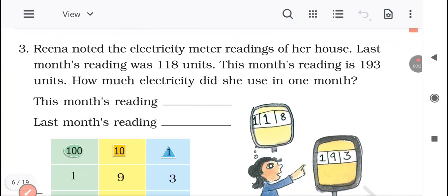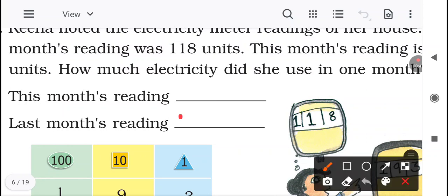Question number 3. Reena noted the electricity meter readings of her house. Last month's reading was 118 units. This month's reading is 193 units. How much electricity did she use in one month? So Reena started noting the electricity meter reading of her house. Last month's reading was 118 units, so we will write here last month's reading 118 units. This month's reading is 193 units, so we will write here 193.